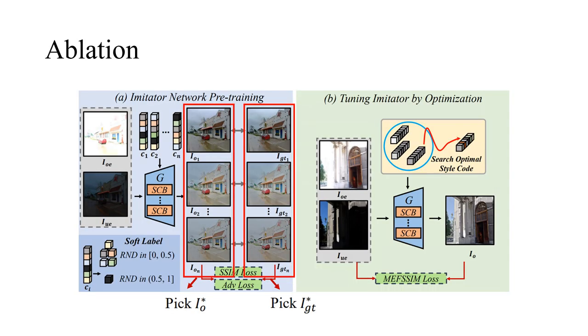Apart from the four methods in the ensemble, we evaluate another four methods in the ablation study. First, we select the MEF result directly from the outputs of the four methods in the ensemble with the highest MEF SSIM score. We call it PIC-IGT. Second, we select the MEF result directly from the four imitation results of the imitator network with the highest MEF SSIM score. We call it PIC-IO. Third, we optimize the latent code instead of the style code. Fourth, we replace the soft label with the hard label.